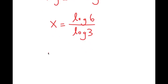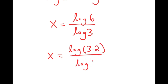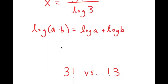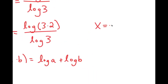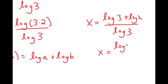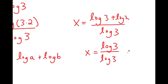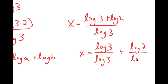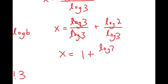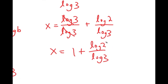Log 6 is the same as log of 3 times 2. Using the rule log(a times b) equals log a plus log b, log 3 times 2 becomes log 3 plus log 2. So I have log 3 plus log 2 over log 3, which splits into log 3 over log 3 plus log 2 over log 3. These cancel giving 1 plus log 2 over log 3. So this is my answer.